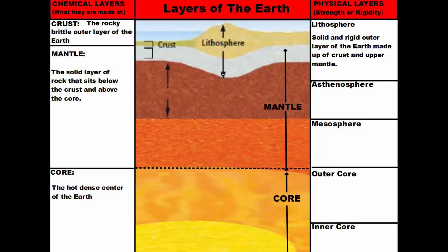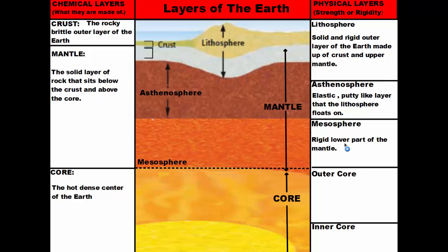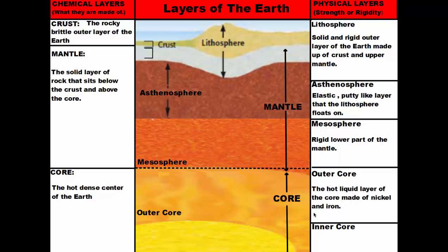Once you get through the lithosphere, you reach a weaker layer called the asthenosphere — an elastic, putty-like layer that the lithosphere floats on. We'll talk more about the asthenosphere's role when we get into tectonic plates, volcanoes, and earthquakes. Once through the asthenosphere, you reach the mesosphere, which is solid, dense rock — the rigid lower part of the mantle — because the pressure of the rock above has squeezed it tight.